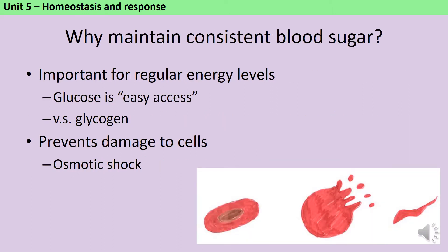When you eat a meal, large quantities of complex carbohydrates like starch are digested to make small sugars such as glucose, which are then absorbed in your small intestine into your blood. Without a control mechanism your blood sugar levels would fluctuate wildly, and we can see this if we look at the unmedicated blood glucose level of people who have type 1 diabetes, where that control mechanism just isn't working.